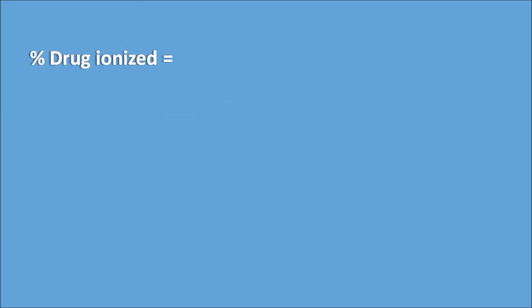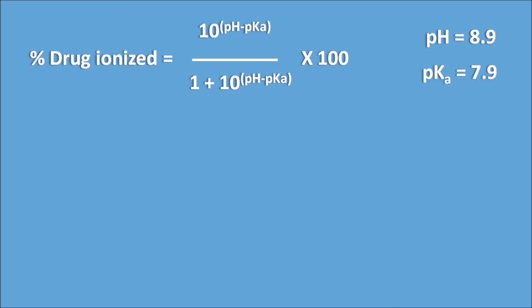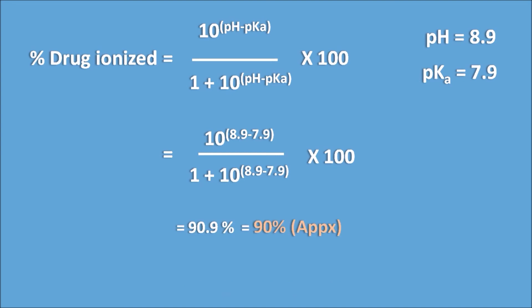Alternatively, you can determine the percentage drug ionized directly using the formula: [10^(pH − pKa) / (1 + 10^(pH − pKa))] × 100 for a weak acid. With pH 8.9 and pKa 7.9, applying the equation gives 10^(8.9 − 7.9) / (1 + 10^(8.9 − 7.9)) × 100, which again yields 90.9%, so approximately 90% drug ionization.